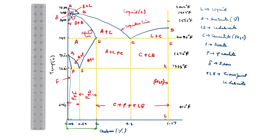Up to here is steel; from 2 to 6.67% is cast iron. From 0 to 0.83% carbon, this line is hypoeutectoid. Up to 2% this is hypereutectoid.